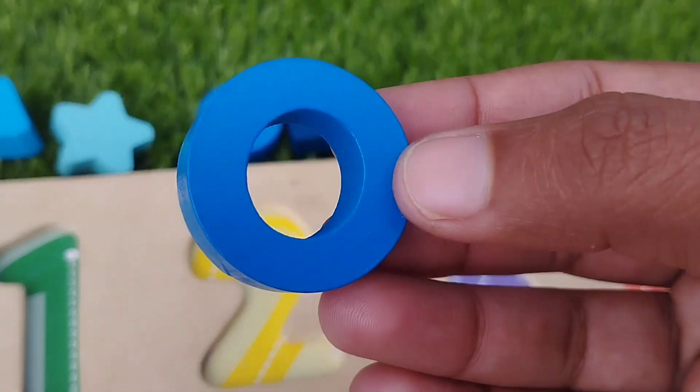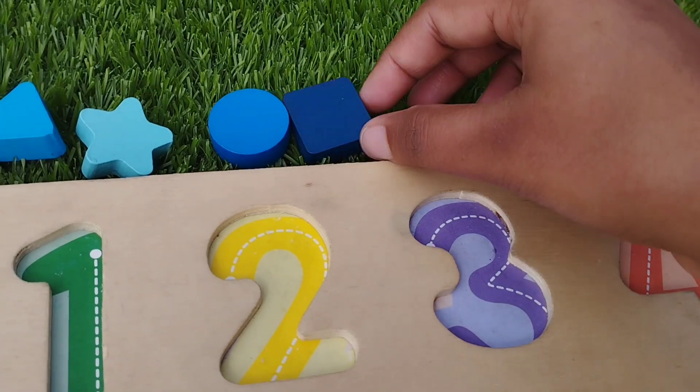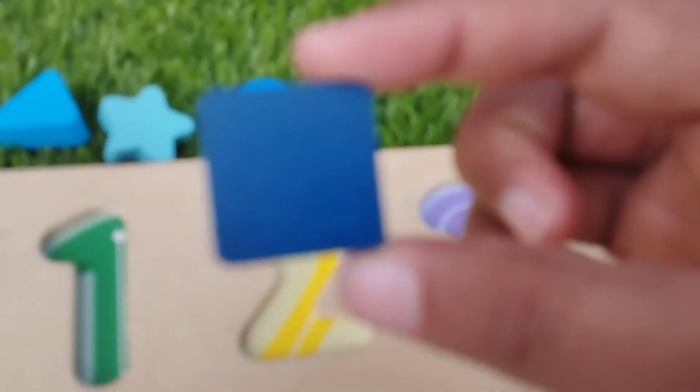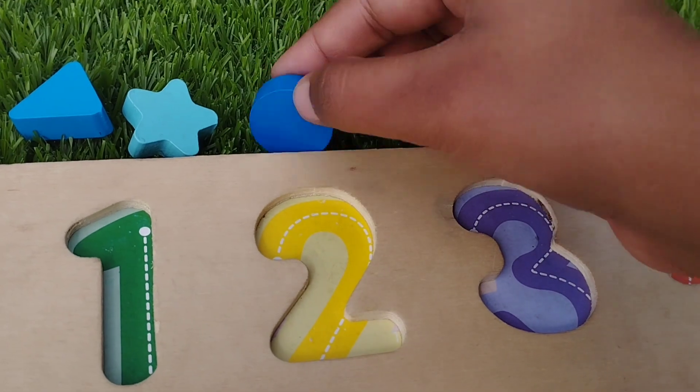Ring. This is ring shape. Square. This is square shape.